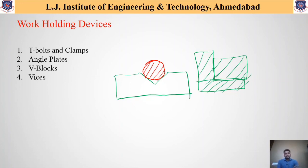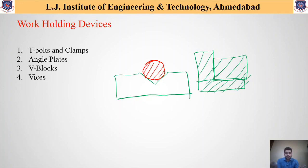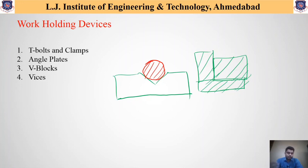The fourth work holding device is the vise. Vises are used to properly fix workpieces on any machining setup. If one wants to fix workpieces at different locations and of different shapes and sizes, vises are used. They have many types, such as bench vise and screw type vise. Different types of vises are available to hold workpieces of different shapes and sizes.